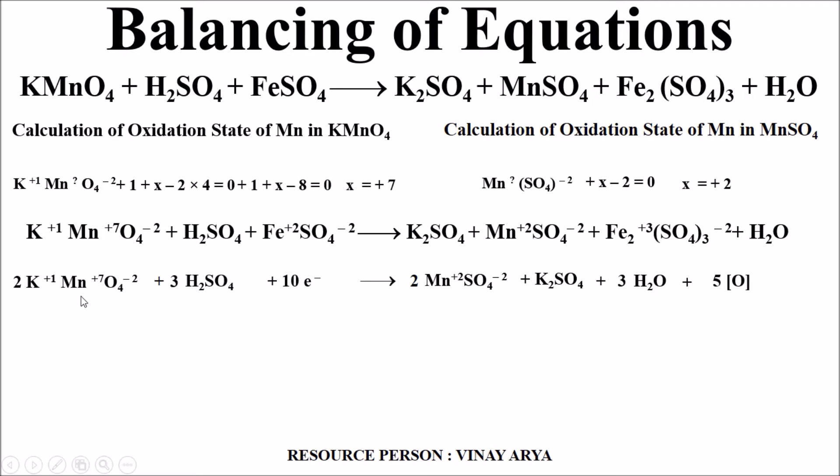Now this is to check: 1 manganese which was +7 oxidation state in reactant and when 2 KMnO4 are there, then 2 manganese are there, henceforth that becomes +7×2 = +14. Now +14 is converted to manganese which is +2×2 = +4. So there are 10 electrons. Henceforth, 5 oxygens and 10 electrons have correlated and these are only the two things which will be removed for the reaction when we consider both reactions.